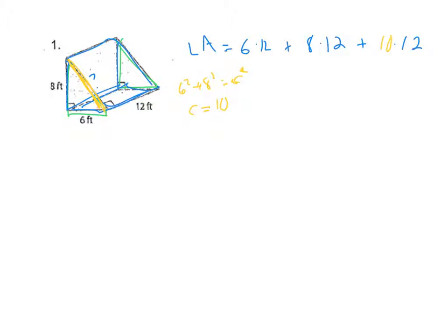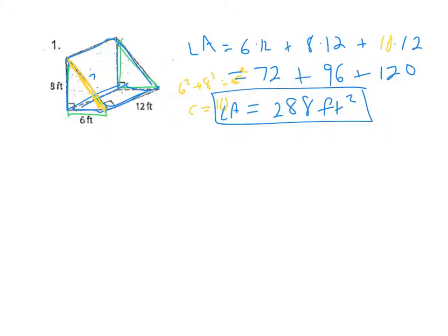My answer for lateral area is going to be 72 plus 96 plus 120. Add all those up and I'm getting 288 square feet. Really, this is just a way of breaking up my area so I make sure I get everything in an organized manner.